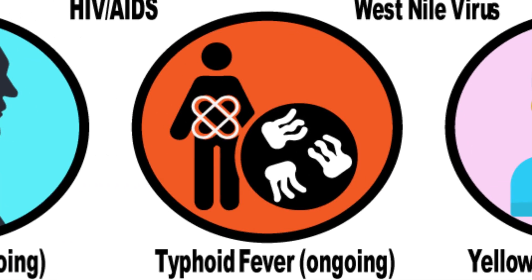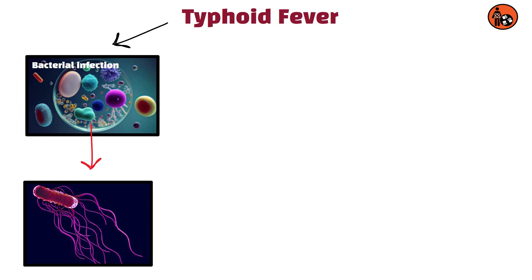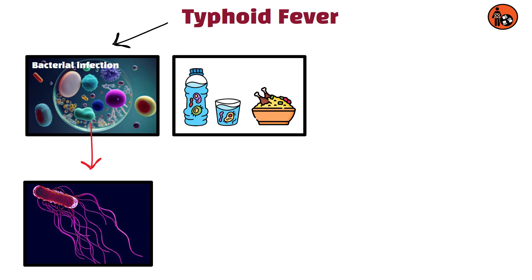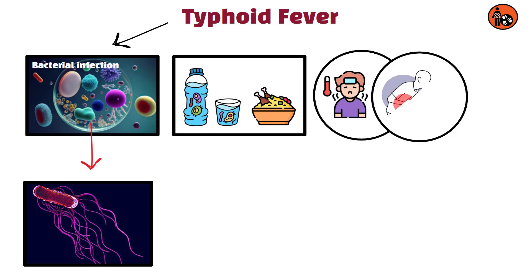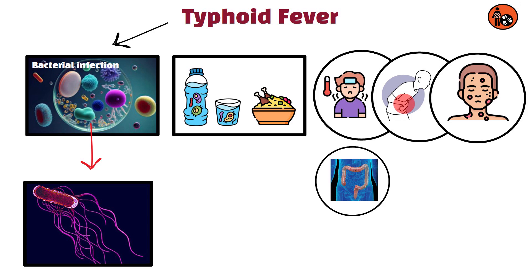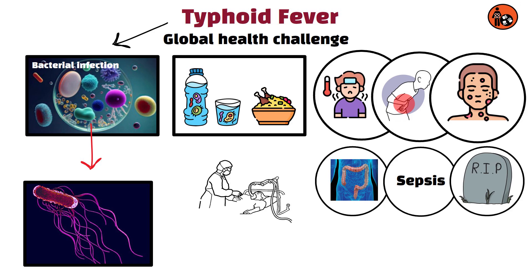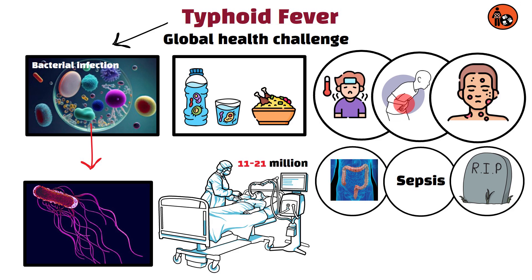Typhoid fever, ongoing. Typhoid fever is a bacterial infection caused by Salmonella enterica serotype typhi. Transmitted through contaminated food or water, typhoid causes high fever, abdominal pain, and rash. Complications can include intestinal perforation, sepsis, and death. Typhoid remains a significant global health challenge, particularly in developing countries with poor sanitation, with an estimated 11 to 21 million cases and 128,161 deaths annually.